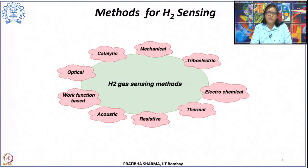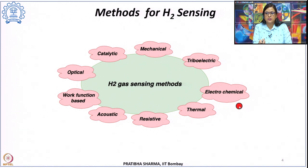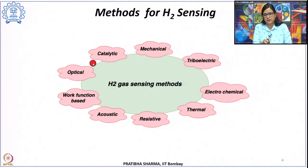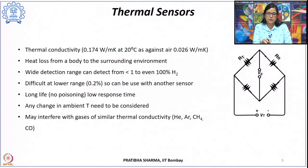Based on the methods of hydrogen sensing, sensors can be classified into mechanical sensors, triboelectric sensors, electrochemical sensors, thermal sensors, resistive sensors, acoustic sensors, work function based sensors, optical sensors, and catalytic sensors. We will briefly review each of these types.